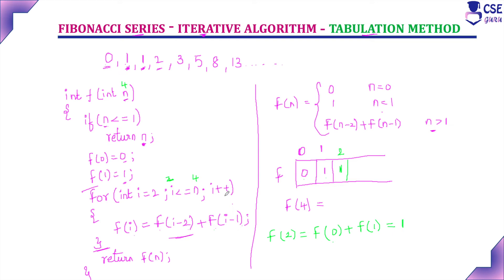Next, i increments to 3. Check: is 3 less than or equal to 4? Condition true. Generate f[3]: f[3] = f[1] + f[2] = 1 + 1 = 2. So the third term of the Fibonacci series is 2.